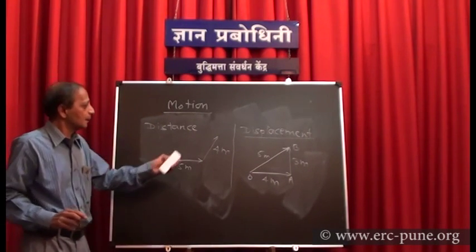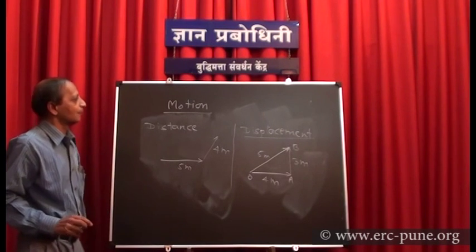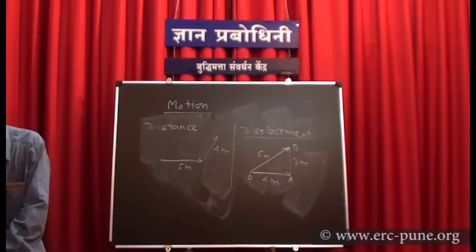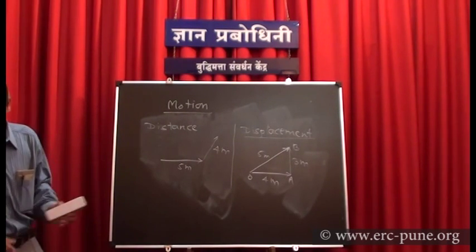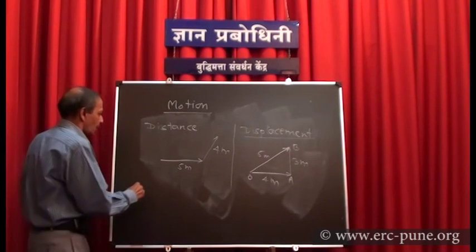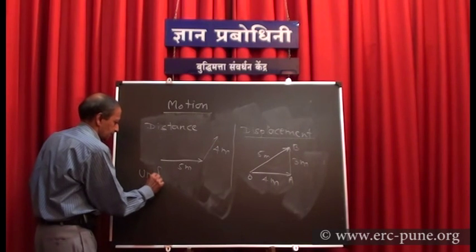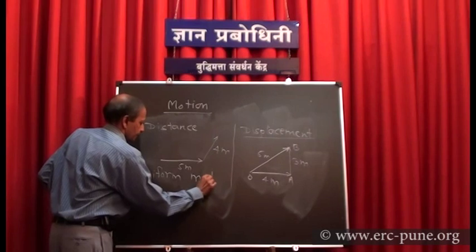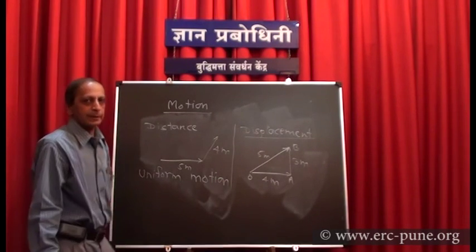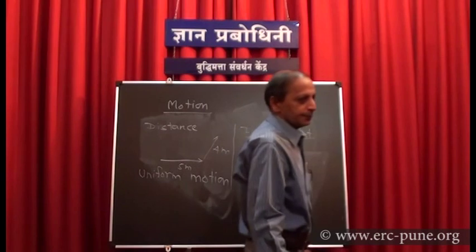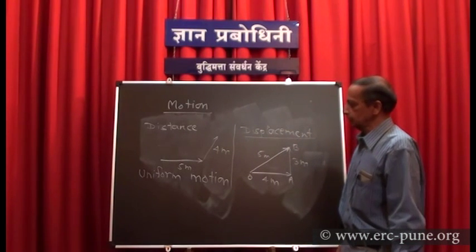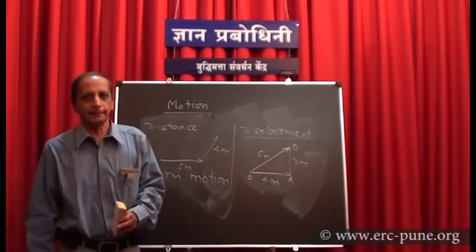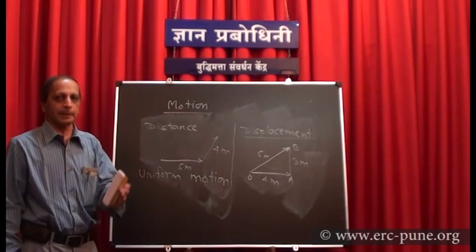These two quantities — distance and displacement — are very important to describe the motion of a body. Now, what do we mean by uniform motion? We will discuss uniform motion and non-uniform motion. A body is in uniform motion if it covers equal distance in equal intervals of time, howsoever small the time interval may be.